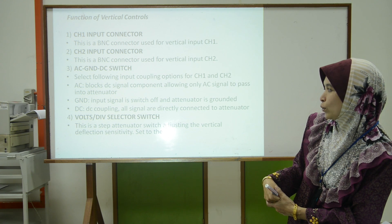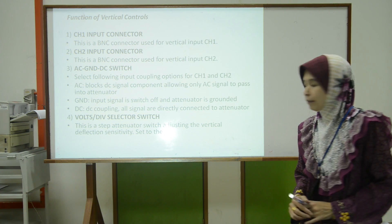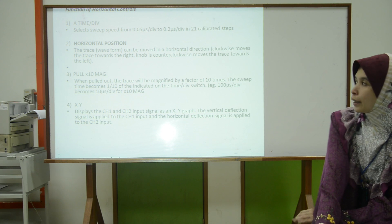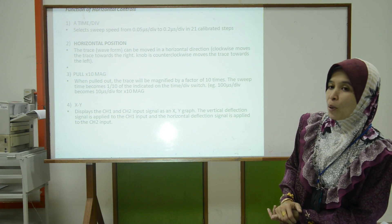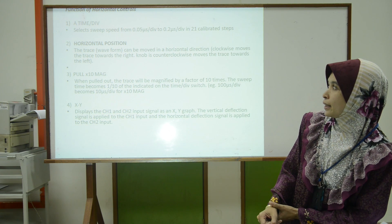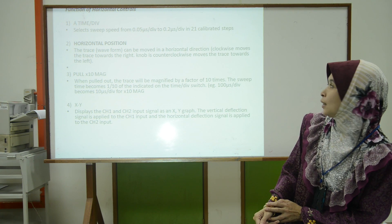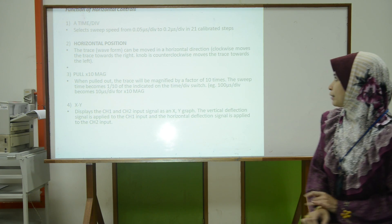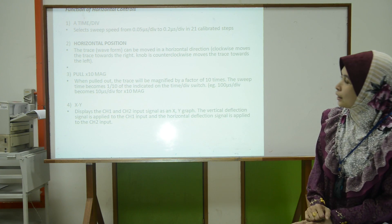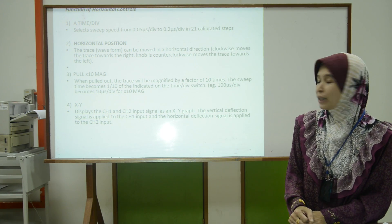The volts-per-division selector switch is used for adjusting the vertical deflection sensitivity. For horizontal control, the most important setting is the time-per-division, which is a select switch with speed ranging from 0.05 microseconds per division to 0.2 seconds per division in 20 calibrated steps.